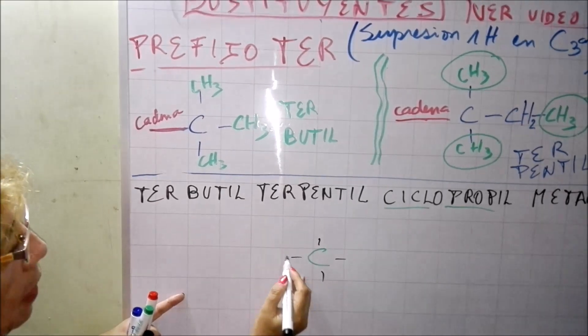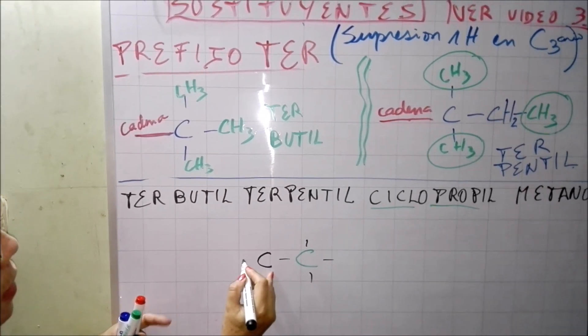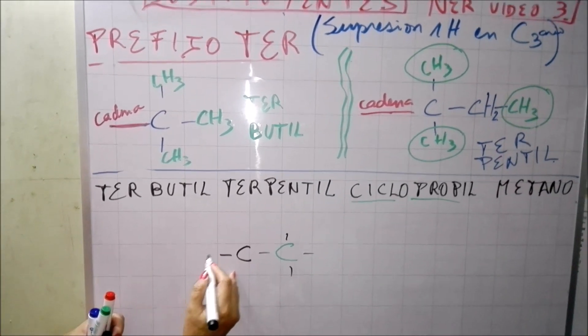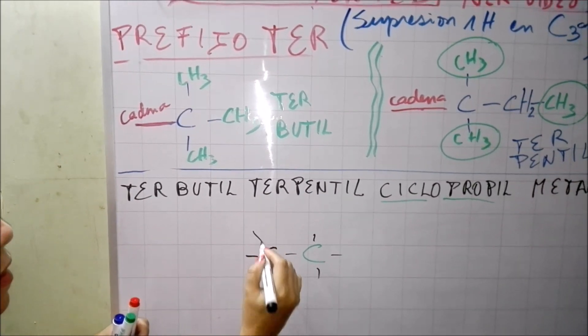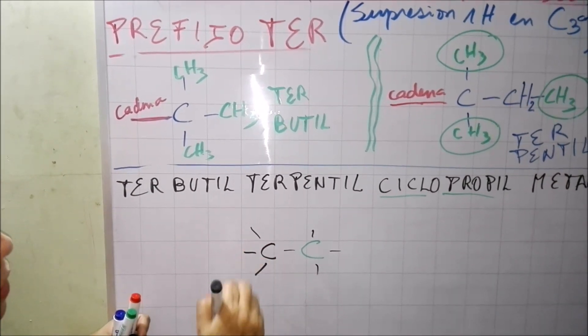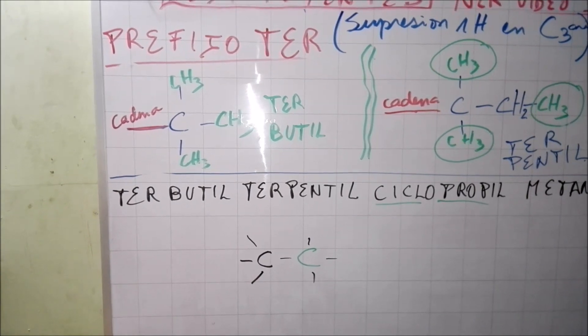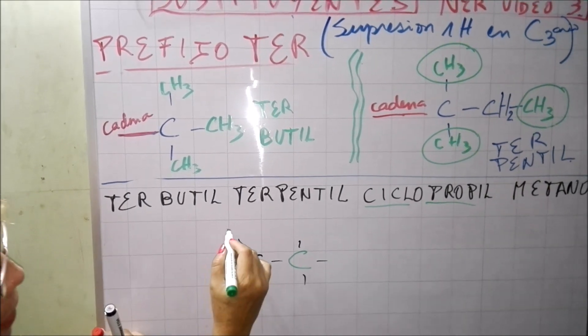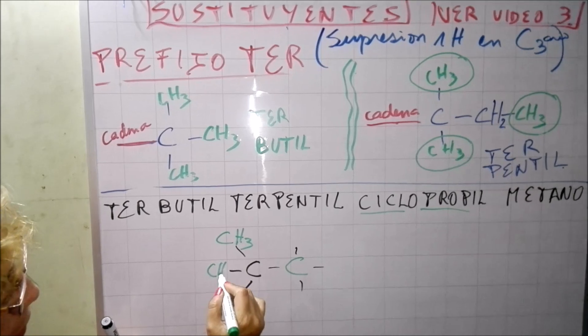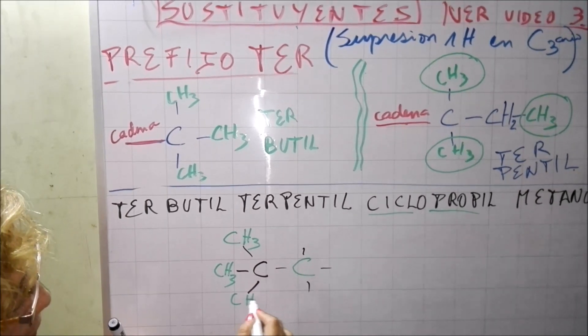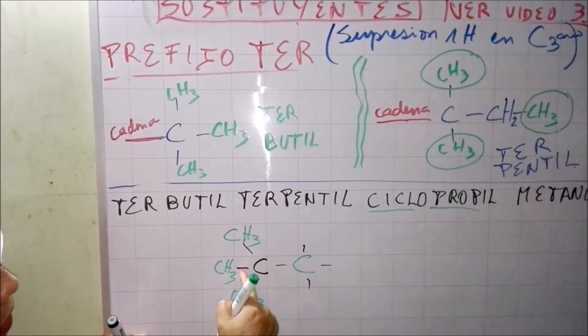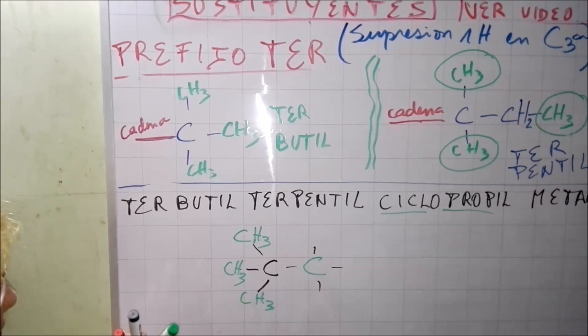a partir de cadena principal lo que voy a hacer es lo siguiente: colocar el terpentil primero. Coloco aquí carbono y aquí cojo y abro. Aquí tengo el 3, mira CH3, CH3, CH3. 1, 2, 3, 4. Aplicado aquí mira.